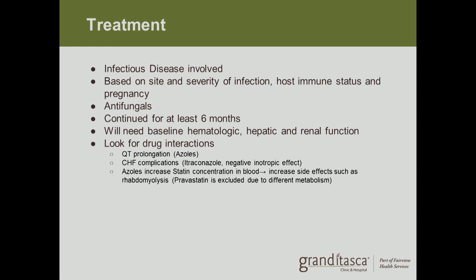For treatment, once diagnosed your physician will typically contact infectious disease specialists. Treatment is based on the site and severity of infection, host immune status, and pregnancy status. Antifungals are the treatment of choice and should be continued for at least six months. Baseline labs including blood count, liver function, and kidney function are required. Amphotericin B is used for severe pulmonary infection, disseminated disease, CNS involvement, immunosuppression, and is first line for neonates and pregnant women. It is nephrotoxic in 30 percent of patients, but this is minimized with IV fluids such as normal saline before and after treatment, along with monitoring of electrolytes and creatinine. Pravastatin is excluded from drug interaction concerns due to the way it is metabolized.